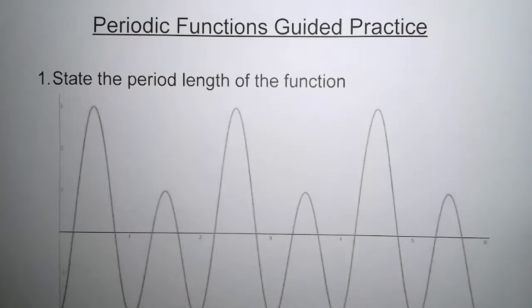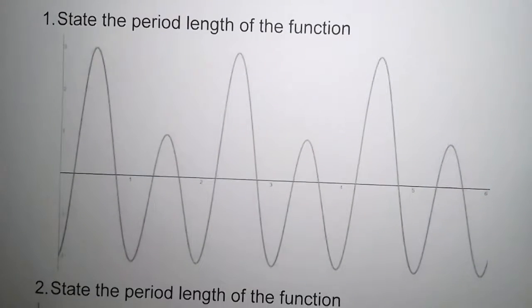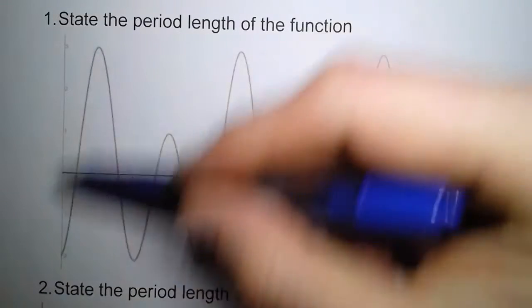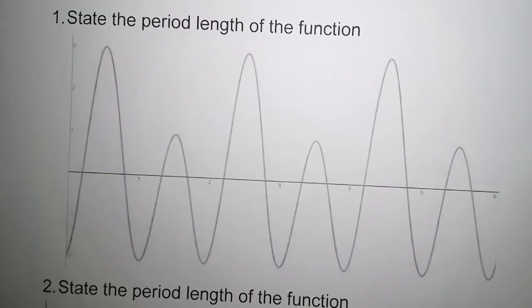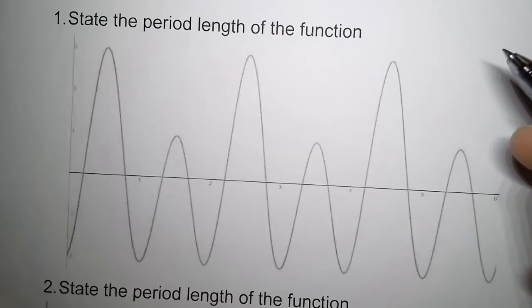Now what we're given is a graph and we want to state the period length. Now if you notice that all of these functions, what does it do? It just repeats itself over and over and over again. Now the question is, how much is there before it repeats itself? How far do you have to draw?